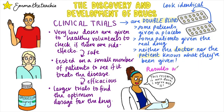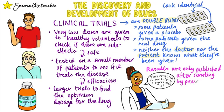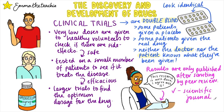The results of drug testing and trials are only published after scrutiny by peer review — when other scientists check the results to make sure they're robust and true. If they are, they'll be published in a scientific journal, and national health bodies will look at the results and decide which drugs should be produced and offered on the NHS.